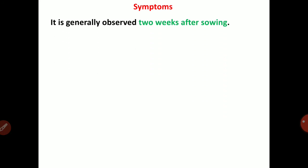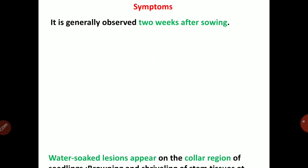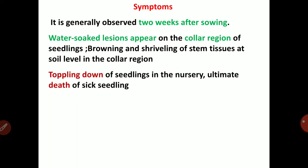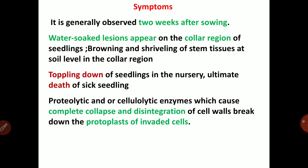Symptoms are generally observed two weeks after sowing. Water-soaked lesions appear on the collar region of seedlings. Browning and shriveling of stem tissues at soil level in the collar region occurs. This leads to toppling down of seedlings in the nursery and ultimate death of sick seedlings. Proteolytic and cellulolytic enzymes cause complete collapse and disintegration of plant cells.